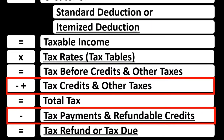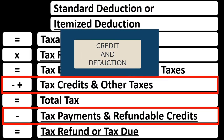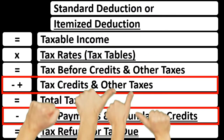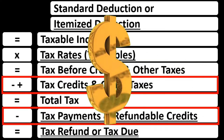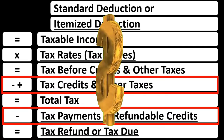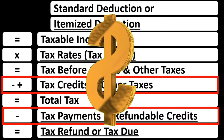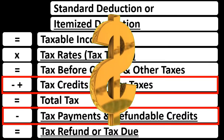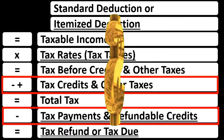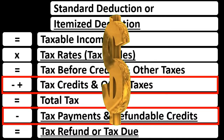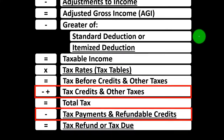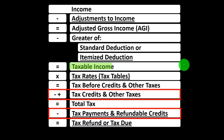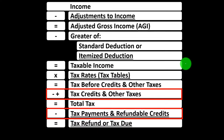Looking at the income tax formula in the credit area, noting that credits and deductions are both good. However, if you had $1 worth of credit versus $1 worth of deduction, the credit is generally better because you get to take the full amount of that dollar as a credit, as opposed to a deduction which reduces your taxable income on which the tax would then be applied.